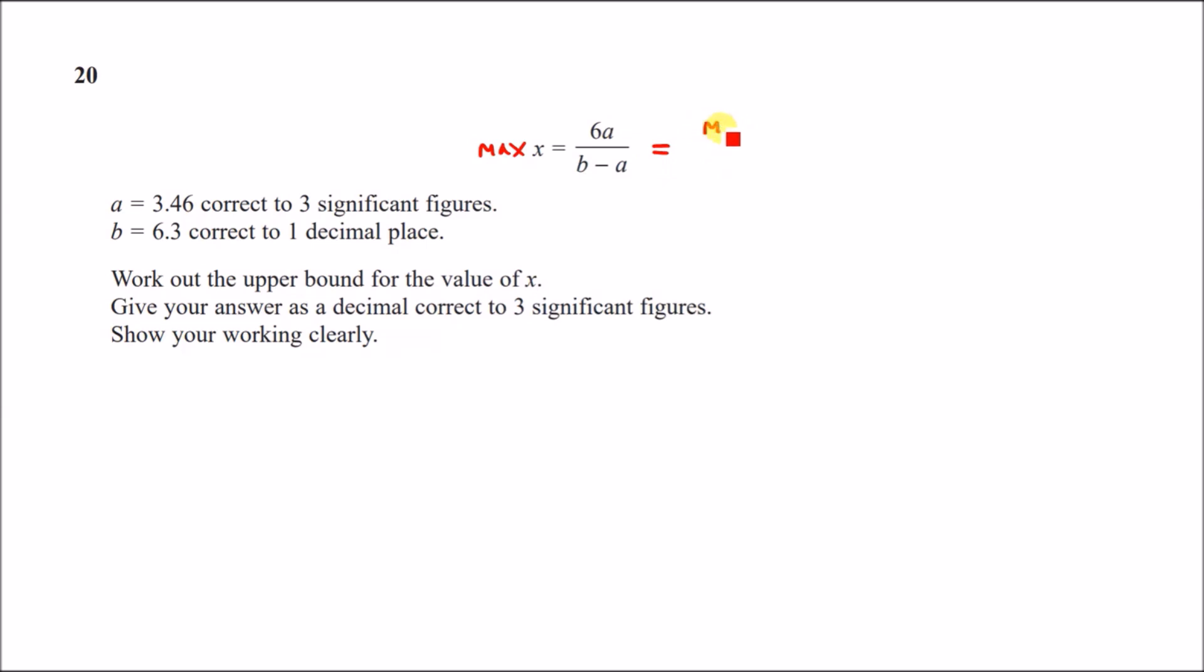Now, it wants us to work out the upper bound for the value of x. So in other words, maximize this. Give your answer as a decimal correct to three significant figures. A nice little trick for these questions. So what I usually do, to know how to maximize this value to get an upper bound for x, we need to firstly maximize the top half and minimize the bottom half. Why? It's because the greater the top and the lower the bottom, the greater the end result.